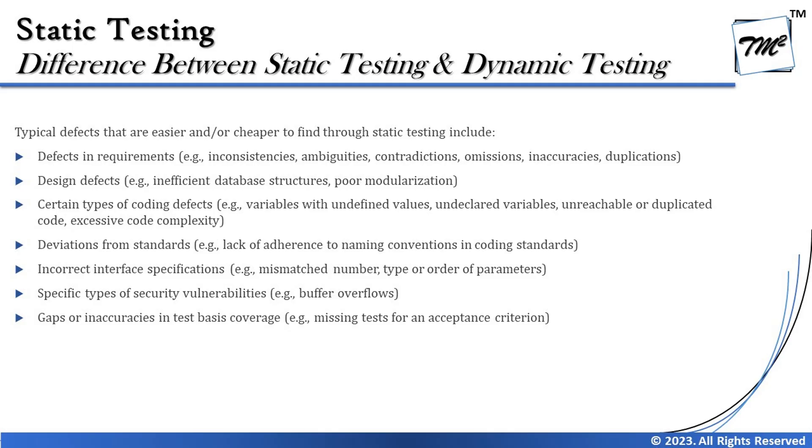For interfaces such as APIs and web services, static testing can detect mismatching numbers, types, or order of parameters between calling and called structures. Specific types of security vulnerabilities — such as buffer overflow — can also be found. Regarding test basis coverage and traceability, there may be gaps or inaccuracies, such as missing tests for acceptance criteria. Traceability links different project components, and if a test case is missing for a requirement, that missing link can be easily reviewed and identified through static testing.